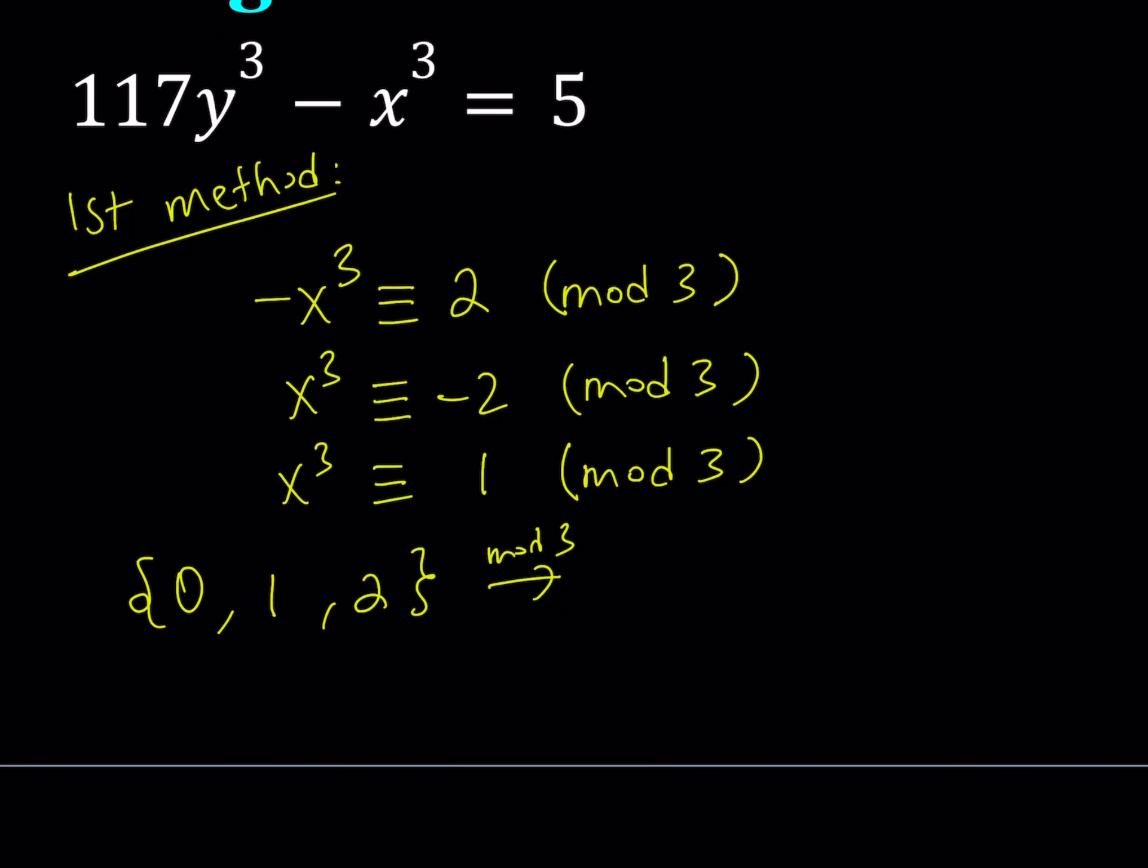When you cube these numbers mod 3, you're going to get the following. 0 is going to be 0, 1 is going to be 1, and 2 is going to be 8, but 8 is 2 mod 3. So, everything basically will be preserved.